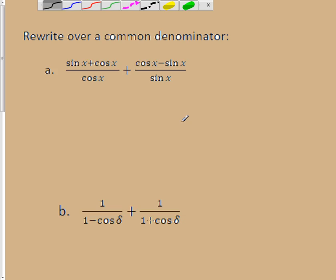So on this one, on this first example, what we're going to do is rewrite over the same common denominator. So our lowest common denominator, or LCD, for this particular set of fractions will be the cosine of x times the sine of x.